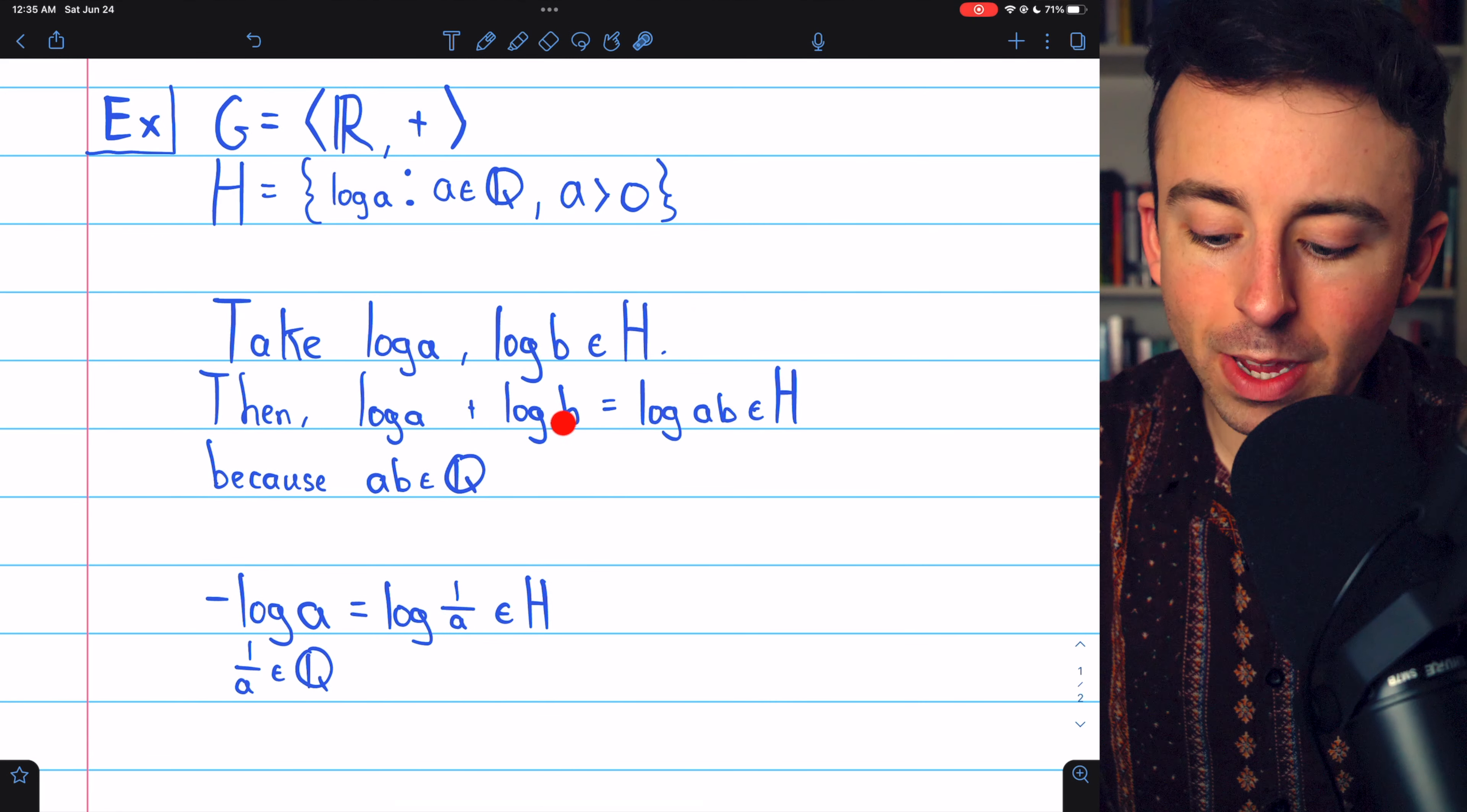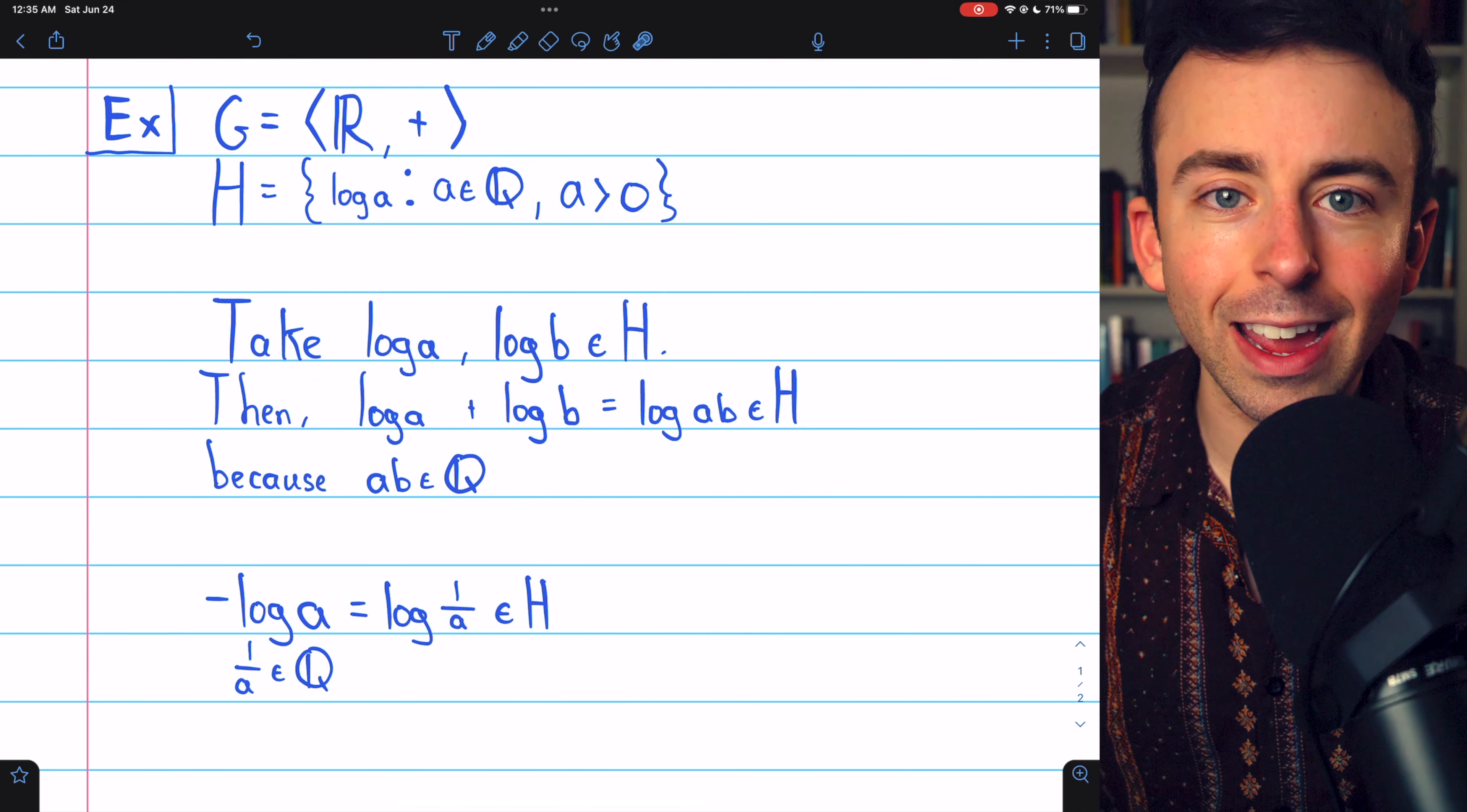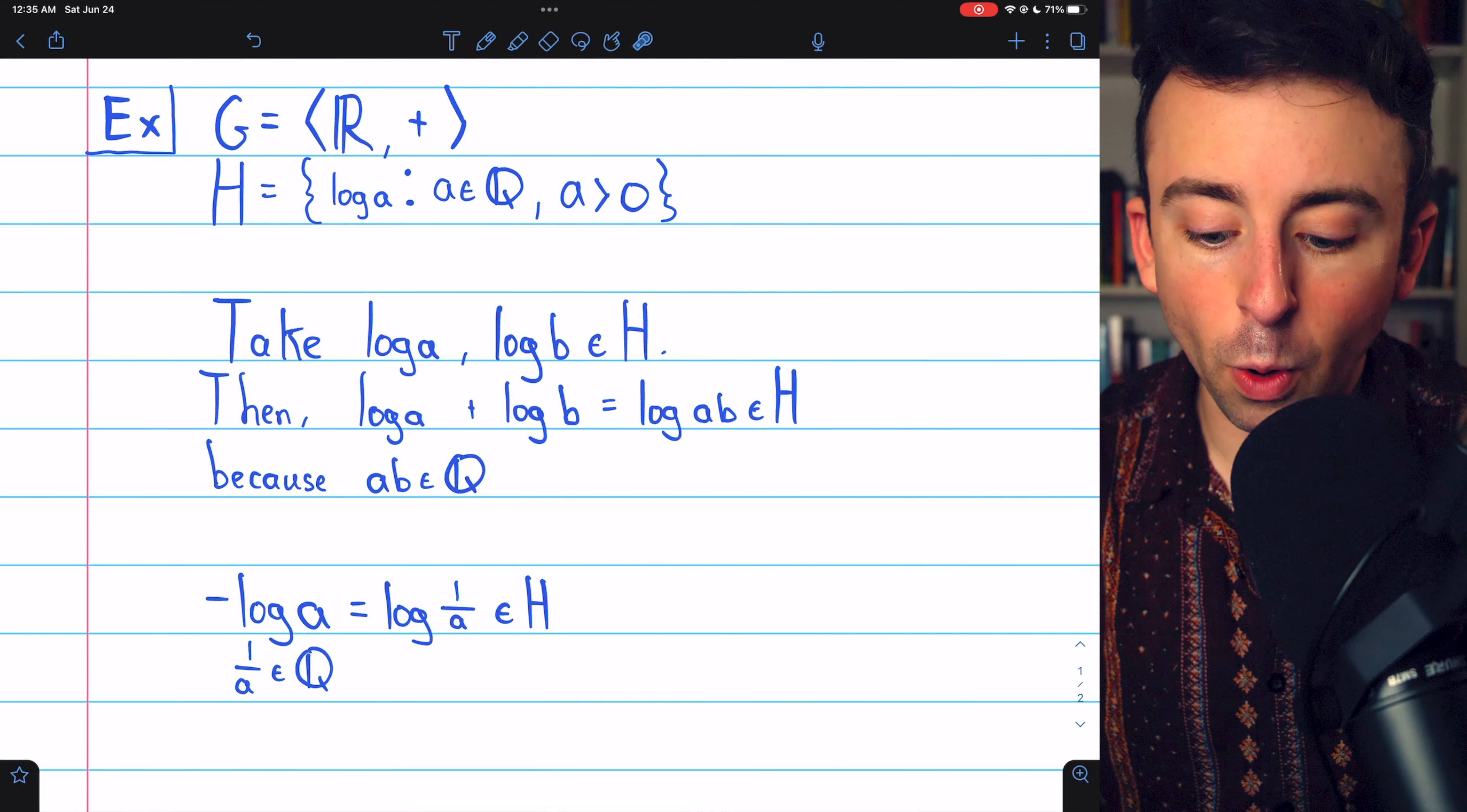Log a plus log b, by our log rules, is actually log of a times b. But we know the rationals are closed under multiplication. A times b is certainly a rational number. I'll leave a link in the description to my lesson proving that if you're not sure.